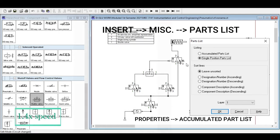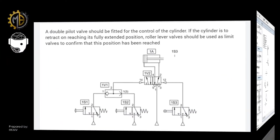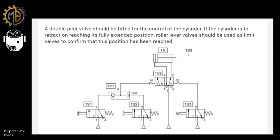Now for an example problem: a double pilot valve should be fitted for the control of a cylinder. If the cylinder is to retract on reaching its fully extended position, roller lever valves should be used as limit valves to confirm that the position has been reached. A double pilot means the final control element is pneumatically controlled. Since a double-acting cylinder is used, the piston will automatically return via the roller lever valve when fully extended.